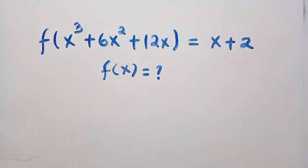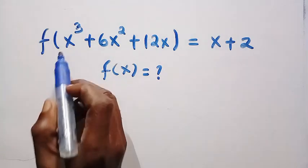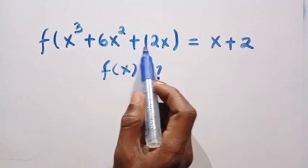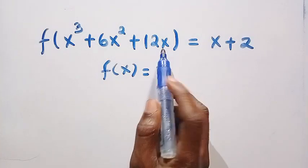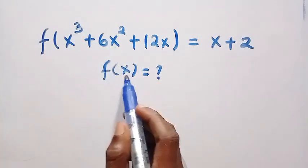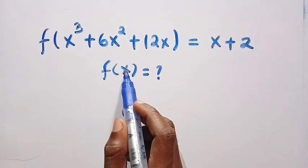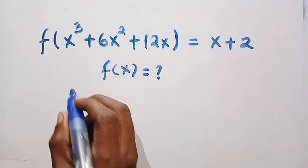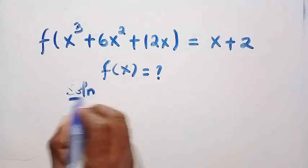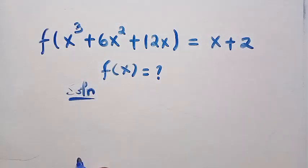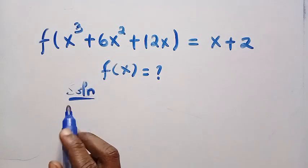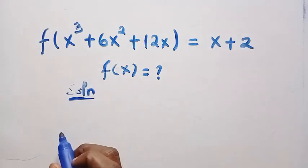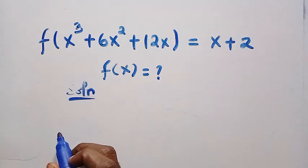We have this domain as x cubed plus 6x squared plus 12x. And how can we find f of x? We can see this is a cubic, that is the power of 3, so this follows a particular trend.